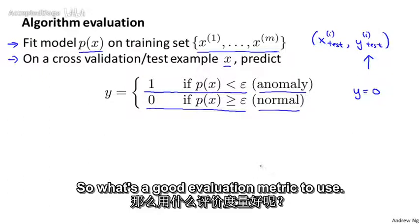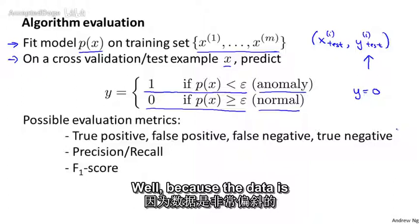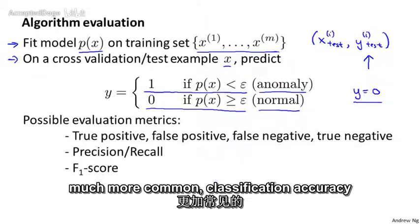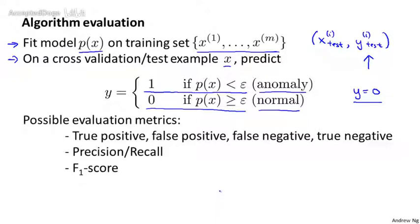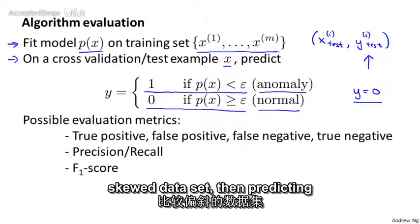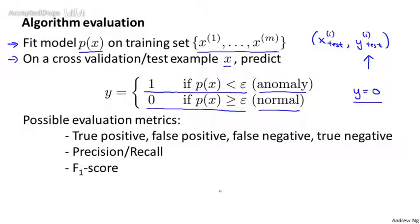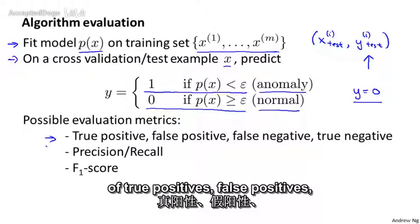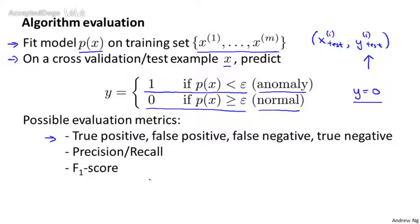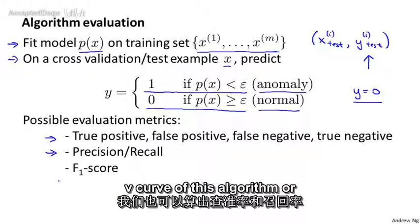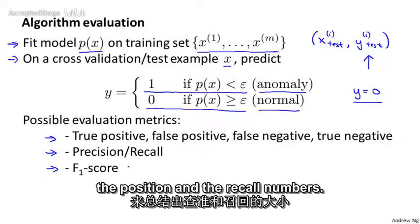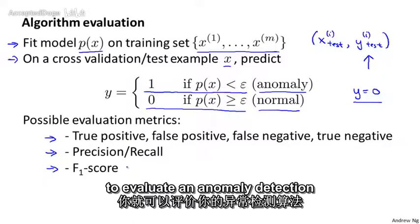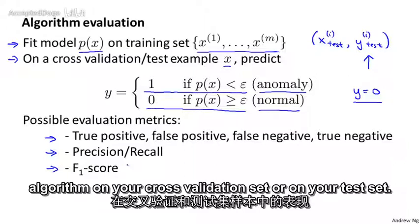So what's a good evaluation metric to use? Because the data is very skewed — y=0 is much more common — classification accuracy would not be a good evaluation metric. If you have a very skewed dataset, predicting y=0 all the time will have very high classification accuracy. Instead, we should use evaluation metrics like computing the fraction of true positives, false positives, false negatives, and true negatives, or compute the precision and recall, or compute the F1 score, which is a single-number way of summarizing precision and recall.